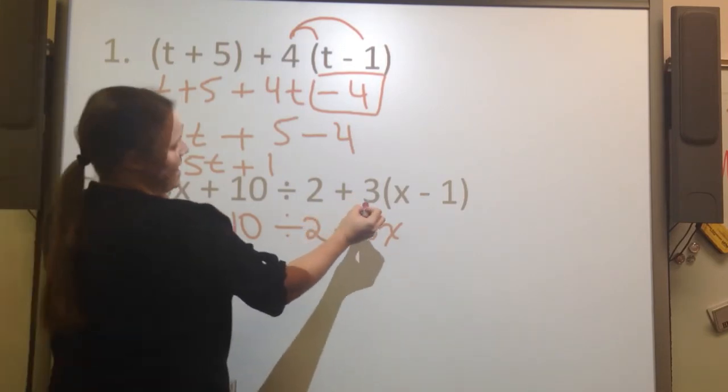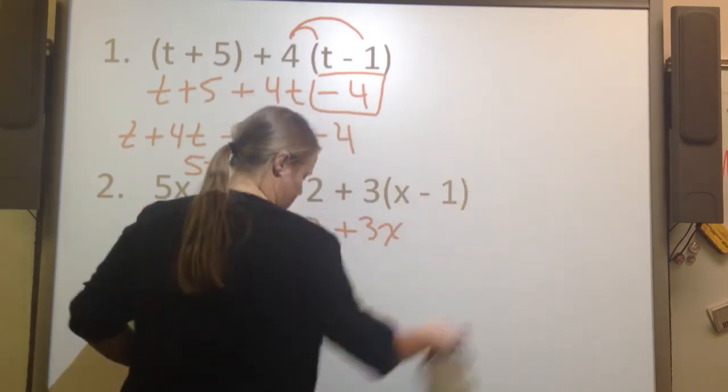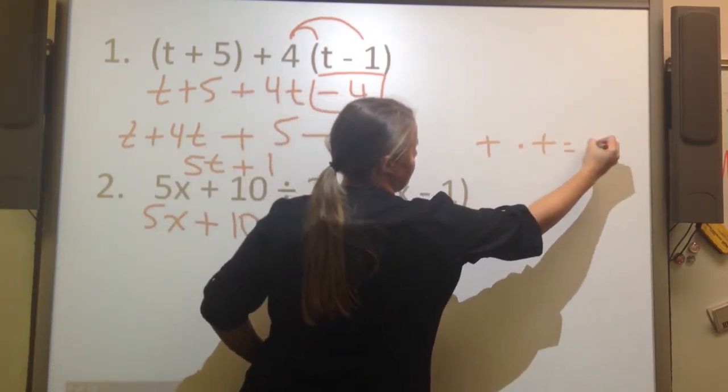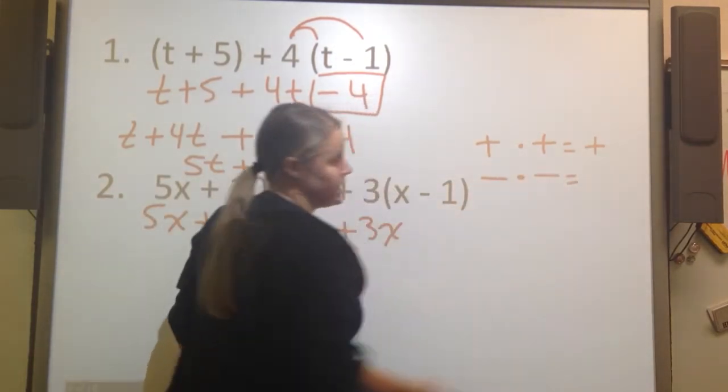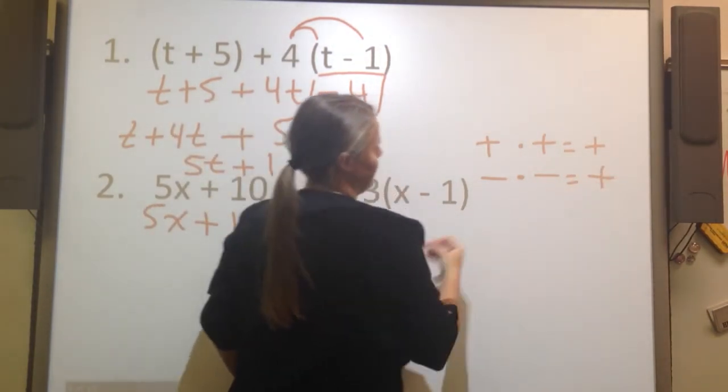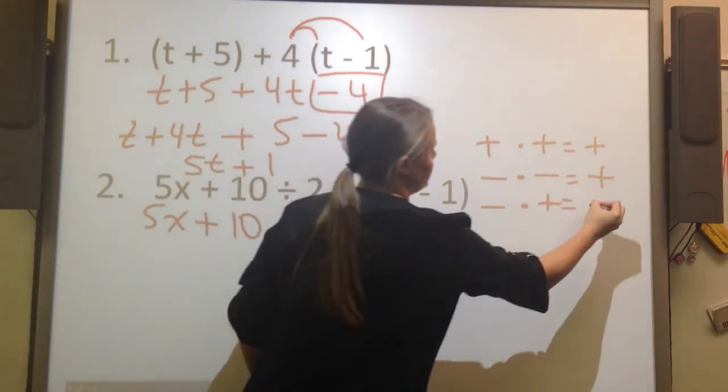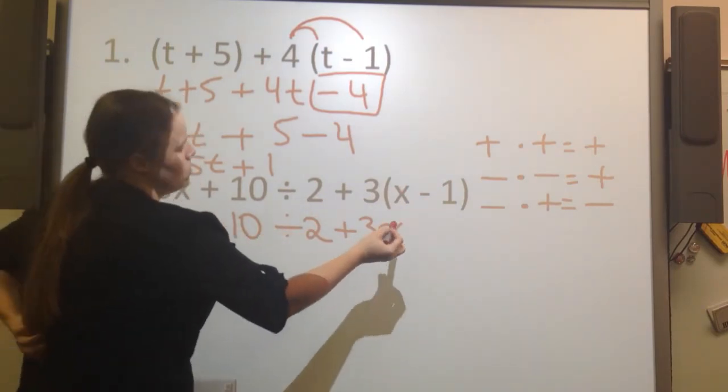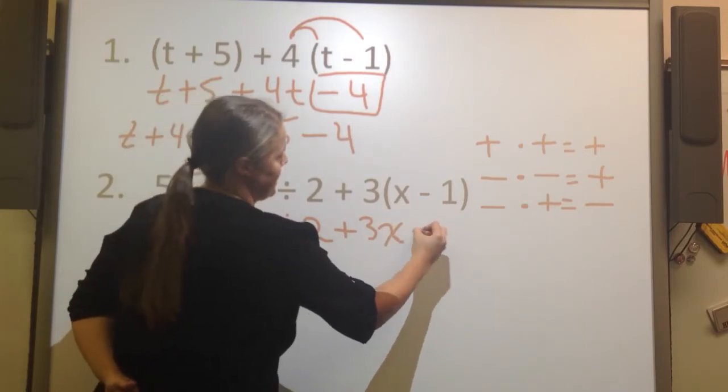And if you didn't remember, when we're multiplying a positive number times a negative number, a positive times a positive equals a positive. A negative times a negative equals a positive. And then a negative times a positive equals negative. So remember that rule. If you didn't remember, write it down now. So 3, a positive 3 times a negative 1 is negative 3.